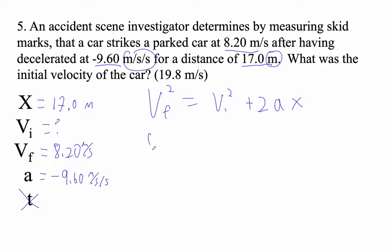Let's carefully plug these numbers in. So this is 8.20 squared equals vi squared plus 2 times negative 9.6 times 17.